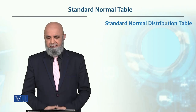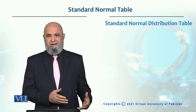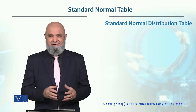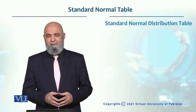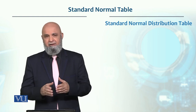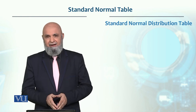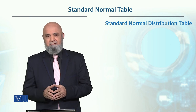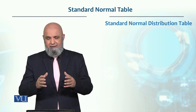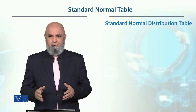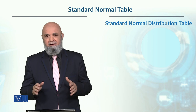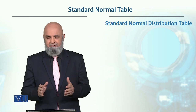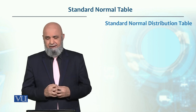Let's look at the standard normal distribution table. We have talked earlier about this table and how we find Z values. Z is the number of standard deviations away from the mean value. In the standard normal table, the mean is 0, and both the negative and positive sides form a bell shape — there is no difference, just a sign.